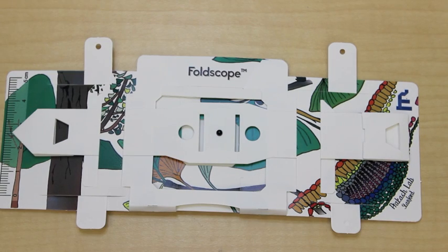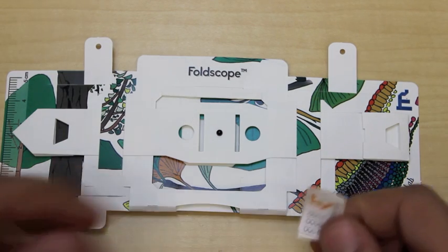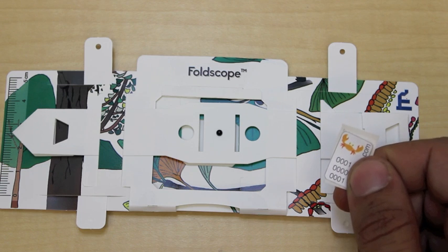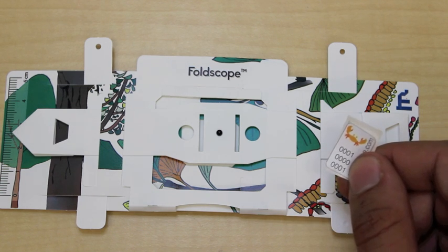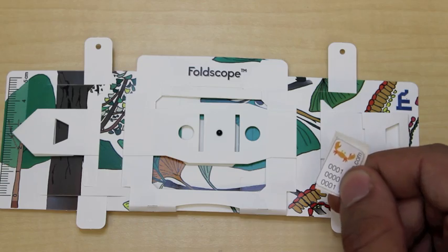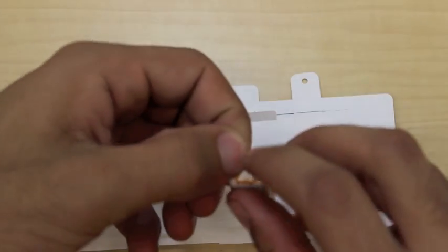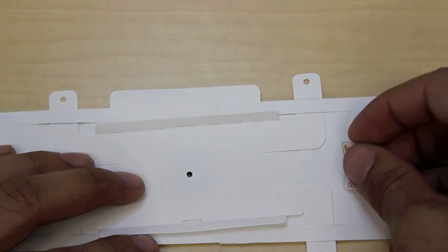I almost forgot. There is one last step. Each Foldscope comes with its own unique identification sticker. This sticker has an ID number which is used to log in to our Foldscope website. So, don't forget to put the sticker on the back of the Foldscope so that you'll never forget the number.